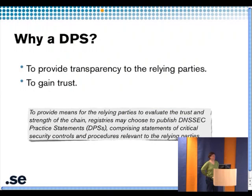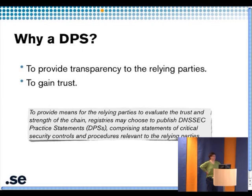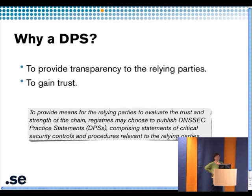Why we put up a DPS was because from the beginning people asked us about that kind of information. So instead of answering all those questions on the phone or by email, we put it together in a specific document. The whole idea is to provide transparency to the relying parties and to gain trust. As it says in the RFC draft, it is to provide means for the relying parties to evaluate the trust and strength of the chain, comprising statements of critical security controls and procedures relevant to the relying parties.